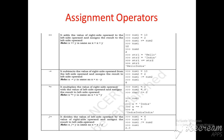Likewise, minus-equal-to means x -= y is the same as x = x minus y. Multiplication-equal-to means x *= y is the same as x = x multiplied by y. Division-equal-to means x /= y is the same as x = x divided by y. This is the use of the assignment operator.